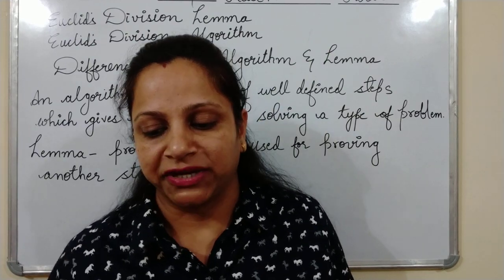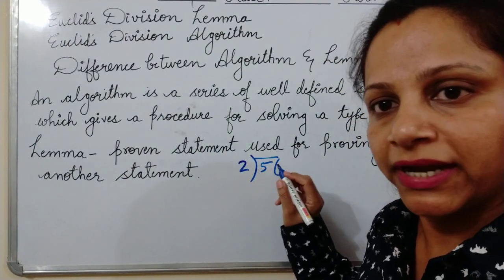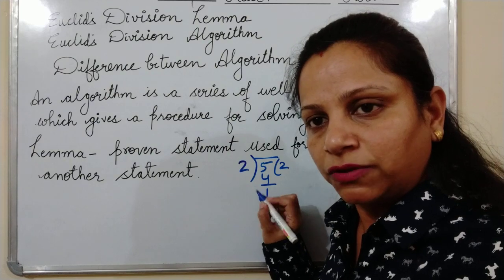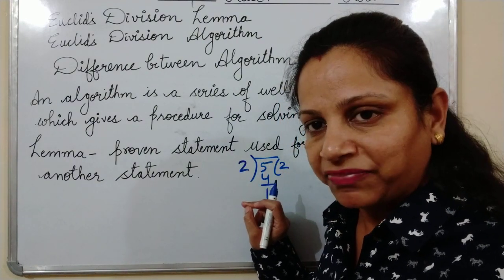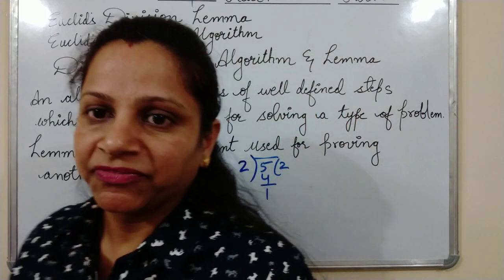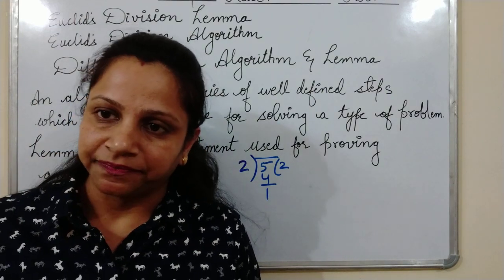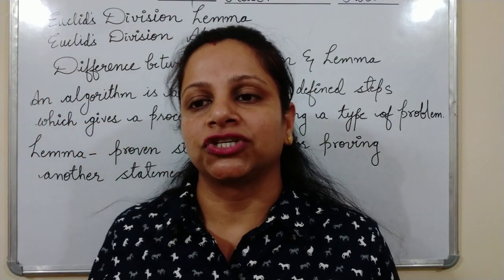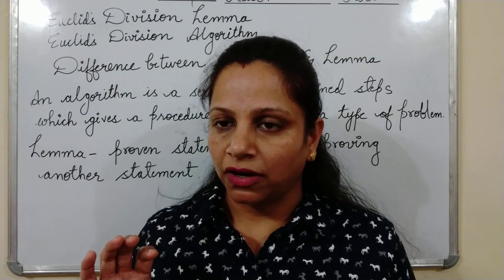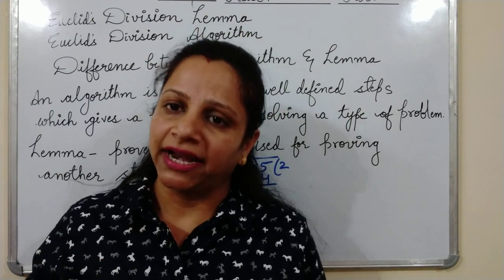Suppose we are solving any question — suppose I divide 5 by 2. Then I will be doing 2 twos are 4 and the remainder is 1. I have followed some steps to do this division, so these steps are known as algorithm. And directly if I say that when I divide 5 by 2 I get remainder 1 — that result after following certain steps is known as lemma. The steps we follow to reach that conclusion are known as algorithm. I hope the difference between algorithm and lemma is clear to you.